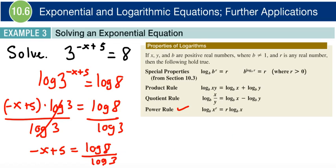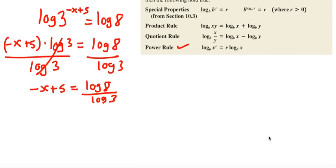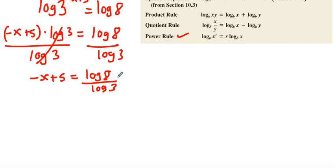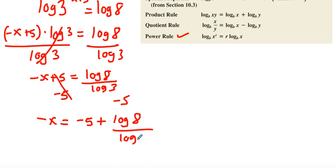And we're left with just a few short steps here to finish off our problem. Let's go ahead and subtract 5 from both sides so we can get rid of that. So now we have negative x is equal to negative 5 plus log of 8 all over log of 3.